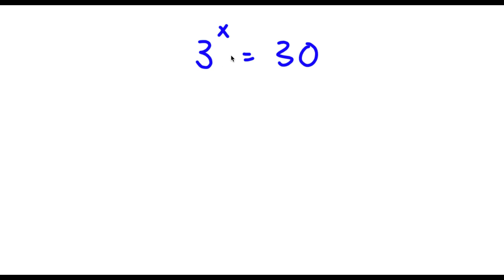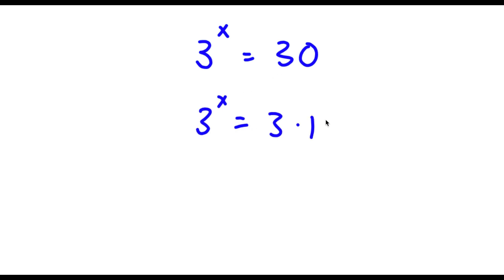Alright, so I have 3 to the power of x is equal to 30. Now to start, 30 we can rewrite as 3 times 10. So now I have 3 to the power of x is equal to 3 times 10.